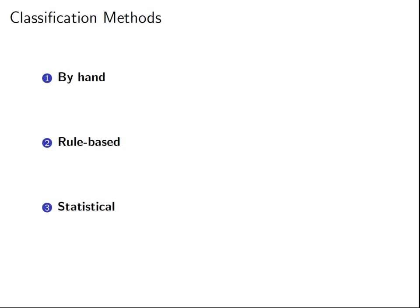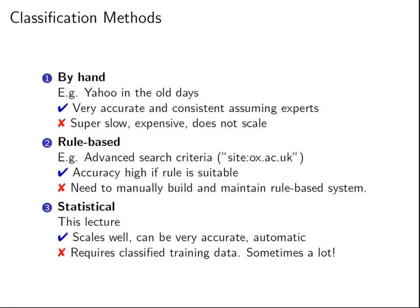How can we classify text? There are broadly three ways. One is just by hand. The second is rule-based, and the third is statistical. If you think of something like Yahoo in the old days, that was manual classification by hand, looking at a website and figuring out which category it should be in. This is great in the sense that it's super accurate and consistent — assuming classification is done by experts. The downside is it's extremely slow, expensive, and doesn't scale.